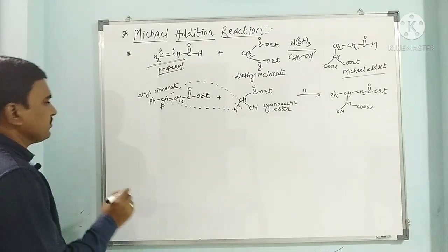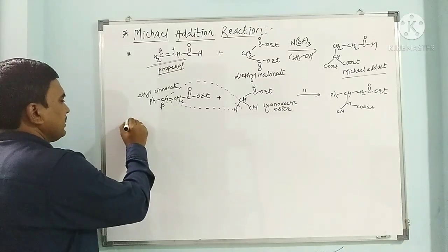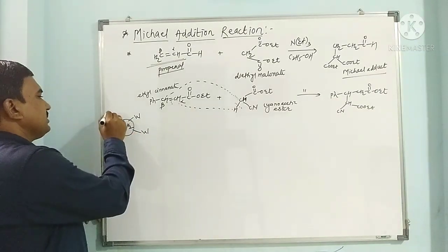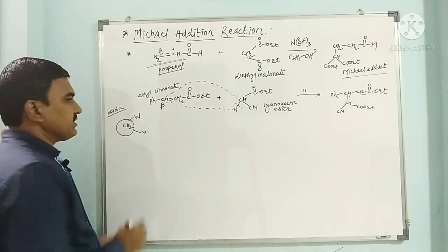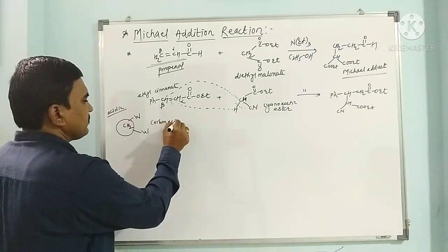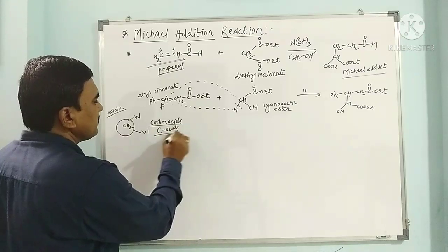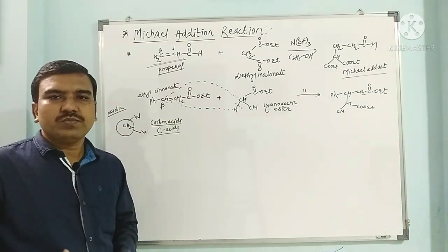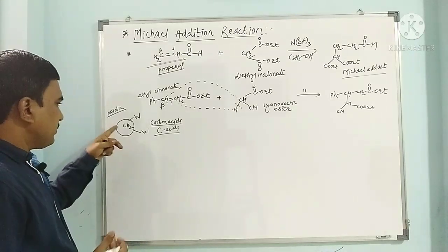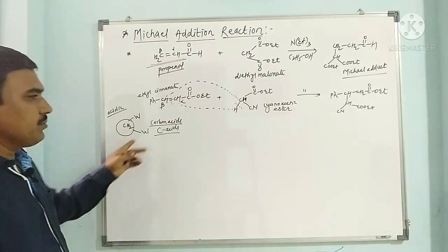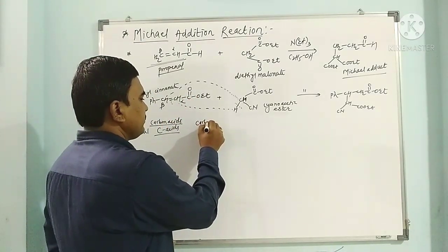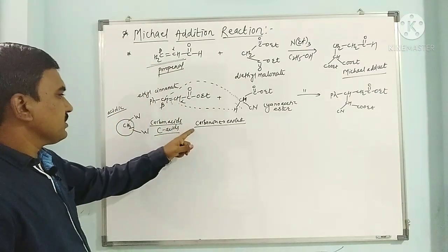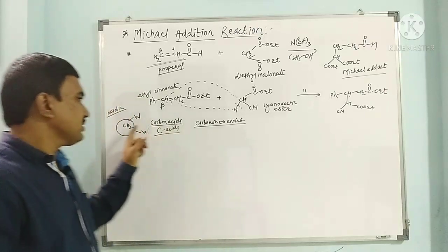Which compound is called an active methylene compound? When CH2 is attached to electron-withdrawing groups, the hydrogens of this carbon become acidic in nature. Such compounds are called carbon acids or C-acids. Why is this hydrogen acidic? Because the electron-withdrawing groups, which may be a carbonyl group, nitrile, or any EWG, stabilize the negative charge and give an enolate ion. This carbanion gives the enolate, which is stabilized. Hence such compounds release a proton when they react with a base, and are called carbon acids.